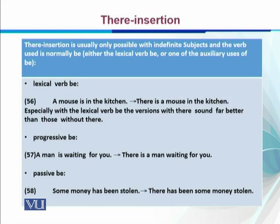The verb used is normally 'be.' For example, with the lexical verb 'be': 'A mouse is in the kitchen' — 'a mouse' is the subject. We can convert this to: 'There is a mouse in the kitchen,' where the subject moves rightwards. Similarly with progressive 'be': 'A man is waiting for you' becomes 'There is a man waiting for you.' It is also possible with passive 'be': 'Some money has been stolen' becomes 'There has been some money stolen.' This is how we make there-insertion, making the sentence lighter and taking the subject into focus position.